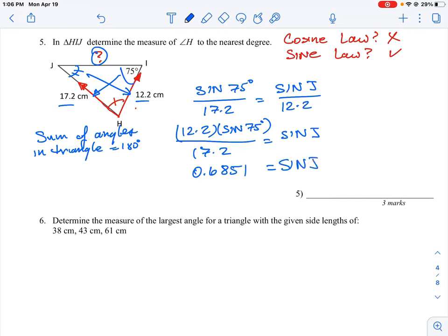Now like we did in question four, we don't want sine j, what we want is angle j. So we need to take the inverse sine of that value, 0.6851, and angle j will be equal to 43 degrees.